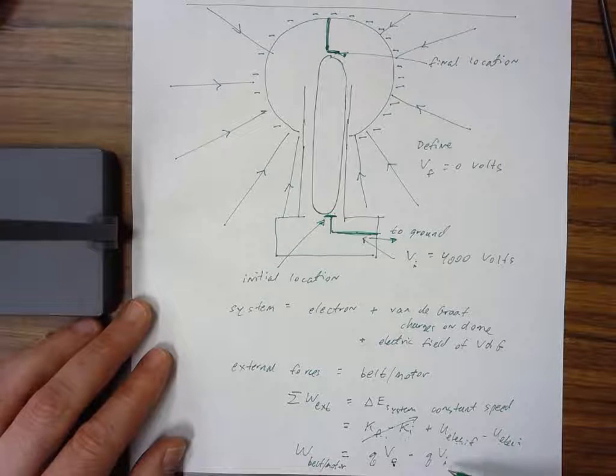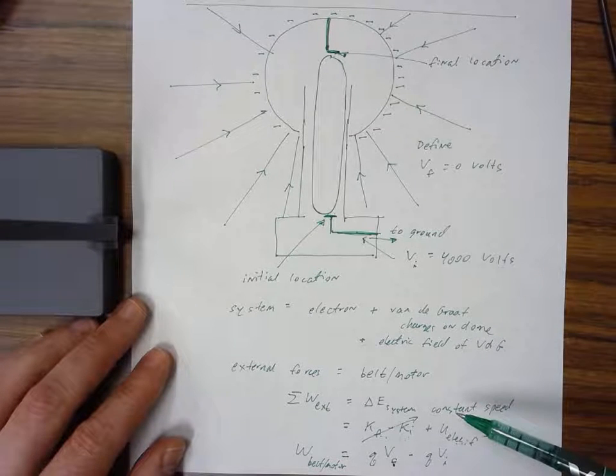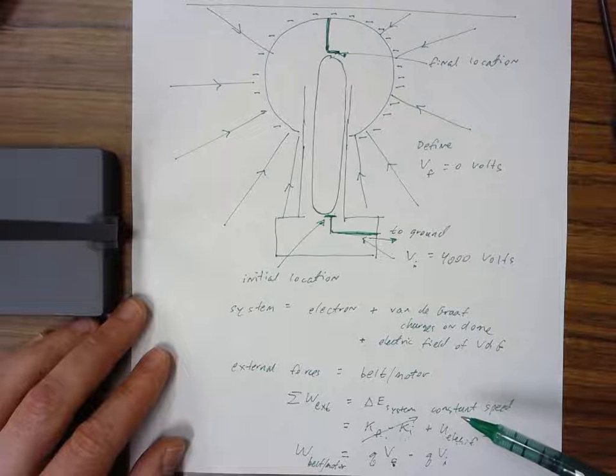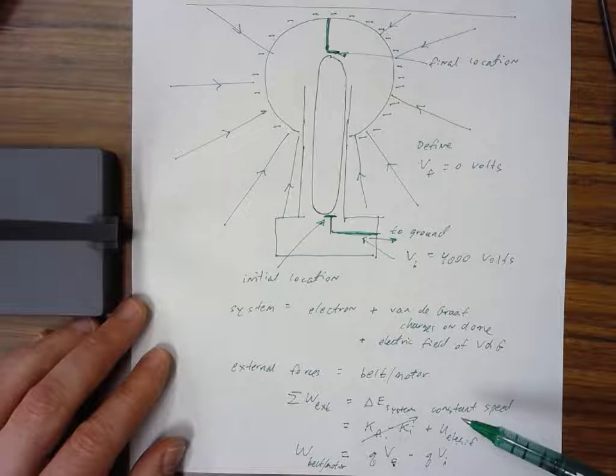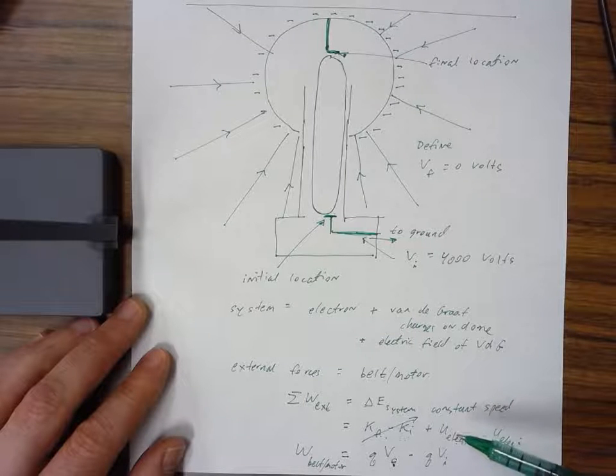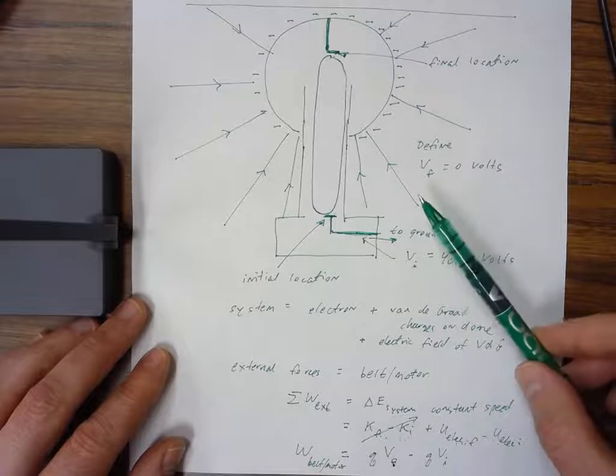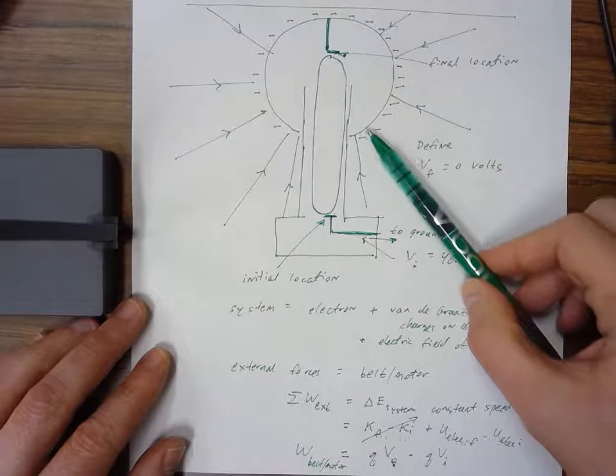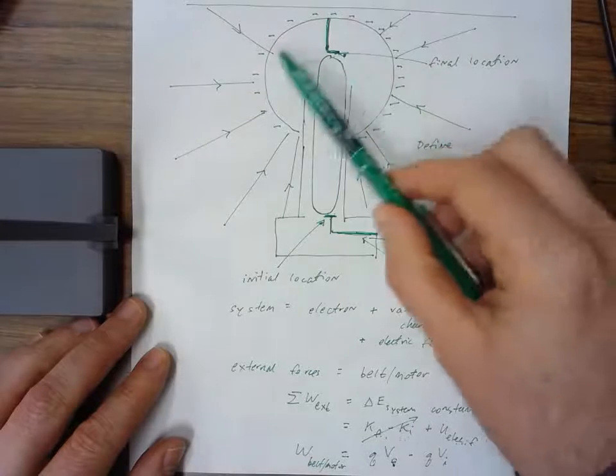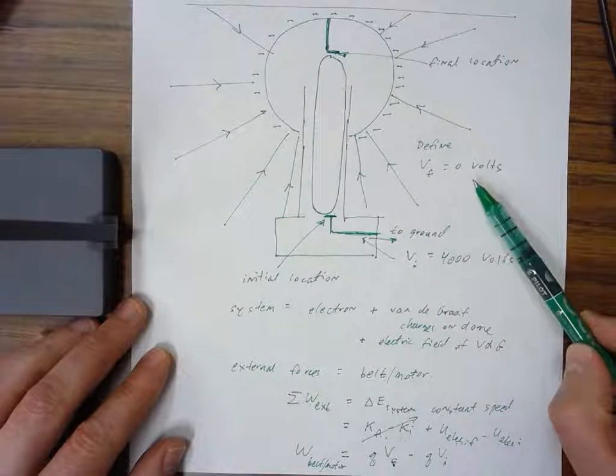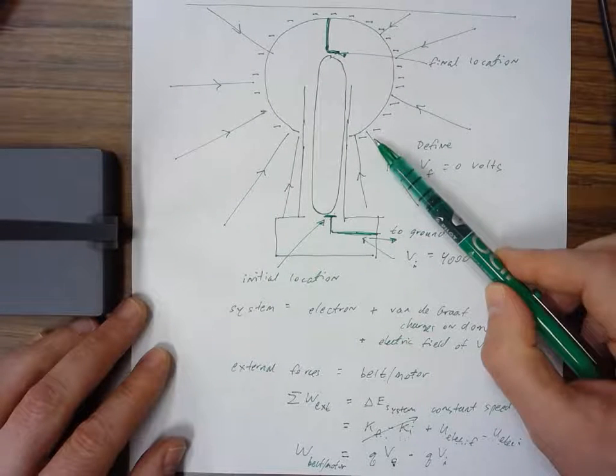I've made up some numbers for the voltages. We can always define a reference voltage of zero at any location we want, but usually we define it at the lowest point in the electric field—the place the field lines point towards, which is the surface of the Van de Graaff. I've defined the voltage there to be zero volts.